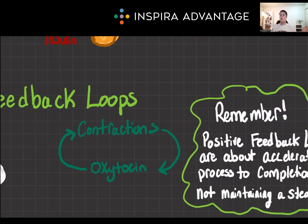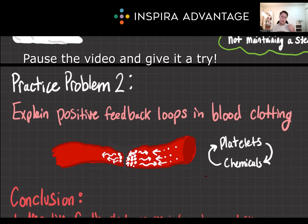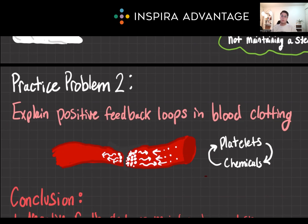Remember, for the MCAT, you need to understand that positive feedback loops are about accelerating a process to completion, not maintaining a steady state. Practice problem two: explain how a positive feedback loop operates in the process of blood clotting. You can use the image here for a hint. When a blood vessel is damaged, platelets adhere to the site and release chemicals that attract more platelets. This aggregation forms a clot and continues until the vessel is sealed — the platelets bring in more platelets, which bring in more platelets, until the wound is sealed.